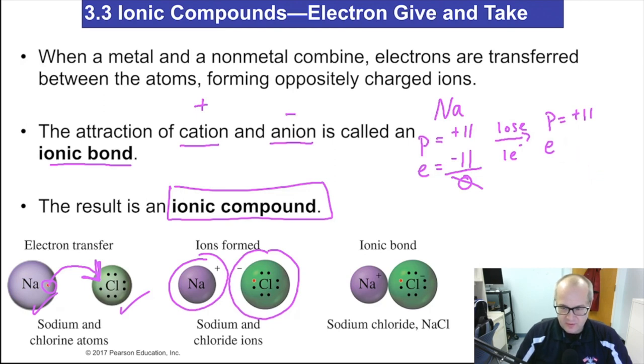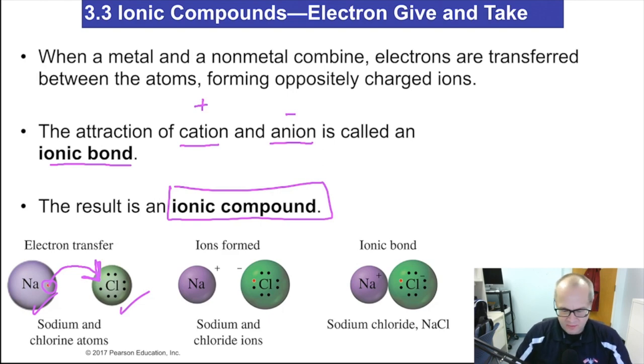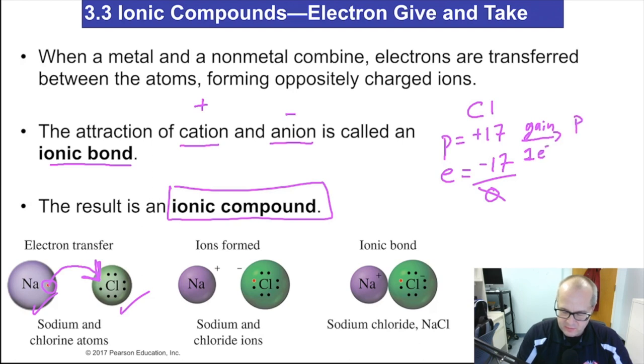We'll do chlorine this time. By the way, guys, if I'm going too fast, just rewind and pause the video. You don't have to listen to it all in one stint. Chlorine has protons plus 17, so the electrons are equal to negative 17, no charge, overall zero charge on chlorine. If chlorine were to gain one electron, the protons would still equal 17, but now the electrons will be 18. You gain an electron, so now you have 18 electrons instead of 17. Overall charge now will be negative one. That's where the charge comes from.